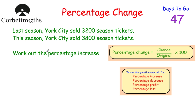Here we've got a question: last season York City sold 3,200 season tickets, and this season York City sold 3,800 season tickets. Work out the percentage increase. Feel free to pause the video now, use this formula, and work out the percentage change.